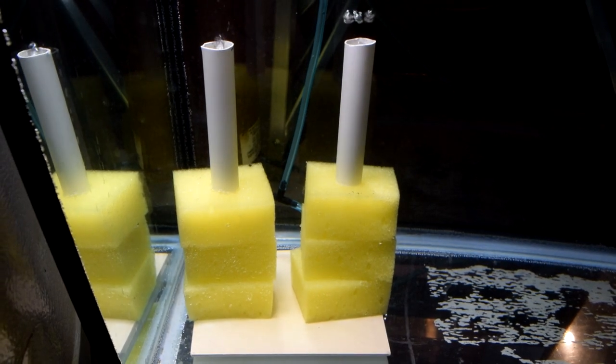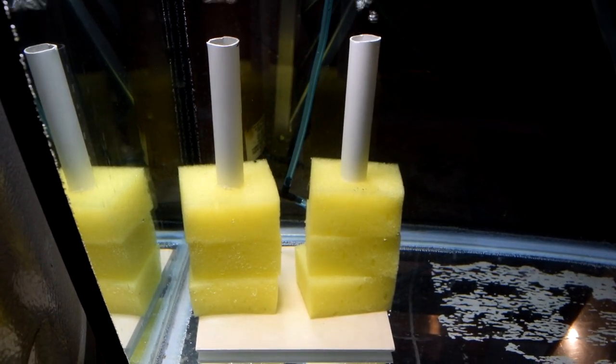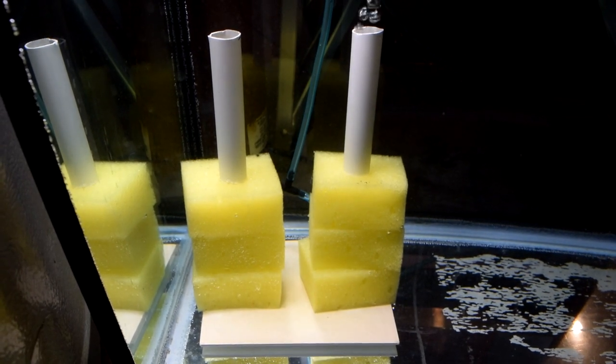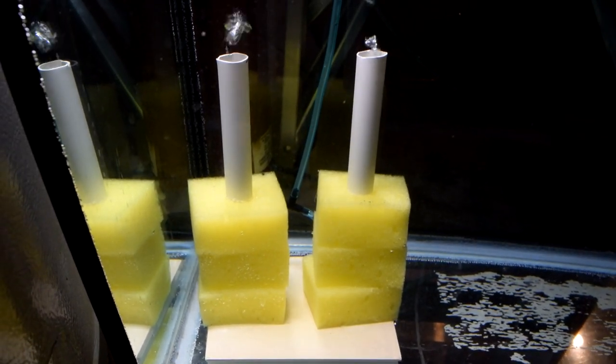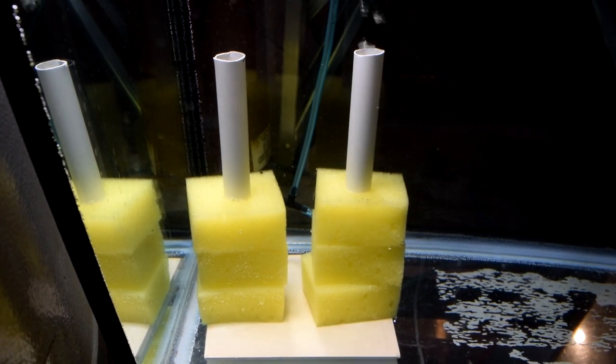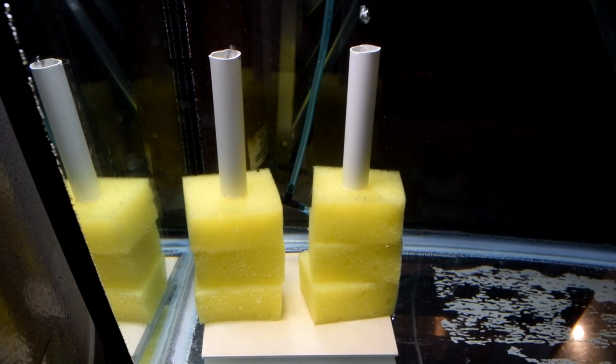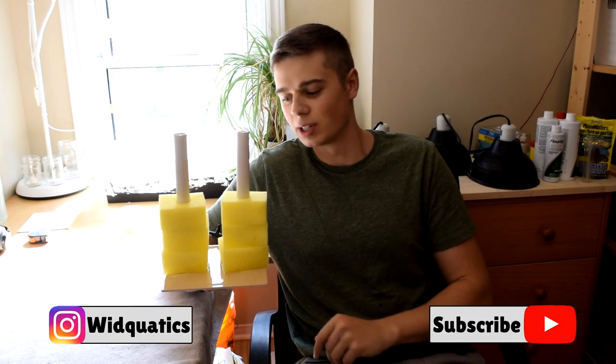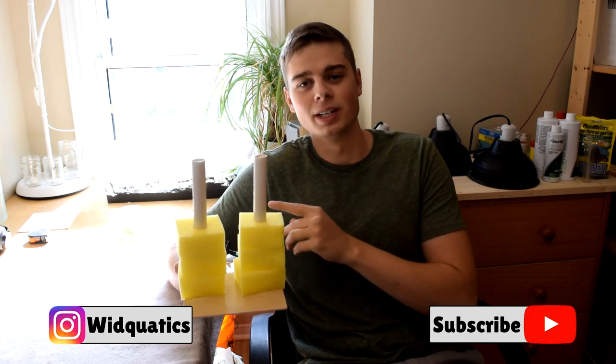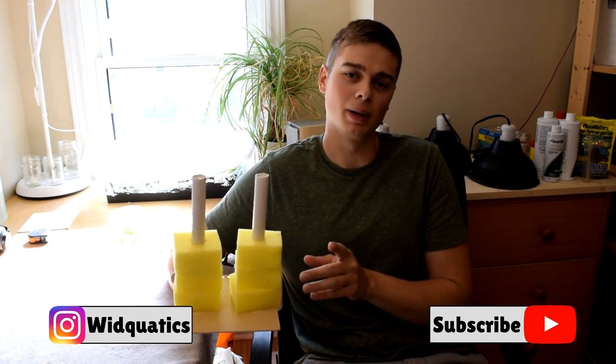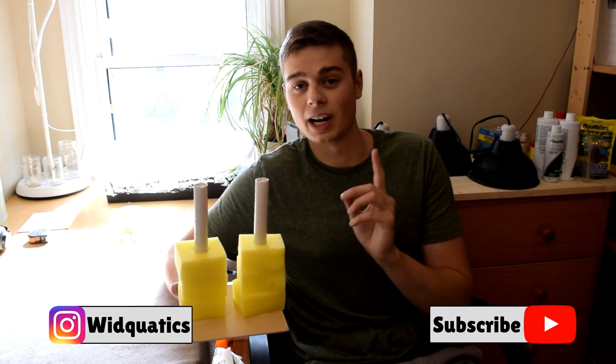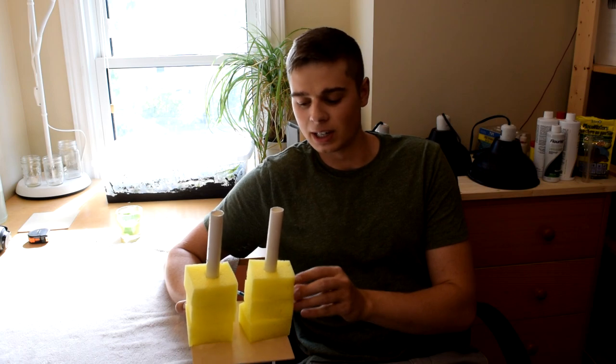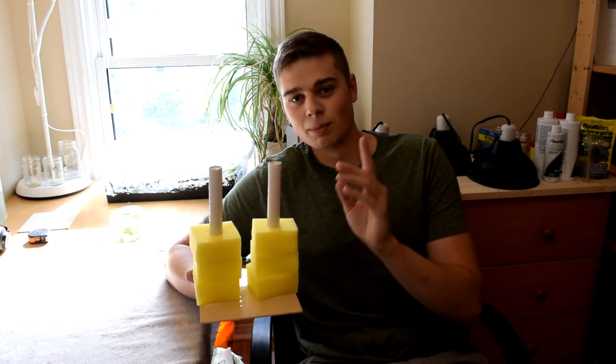All right, and there you have it, the two sponge filters in action. Now you may need to adjust the airflow to each individual lift tube, like I have in this demonstration, just simply using one of those valves that hook into the airline tubing. But as long as you can get both airlift tubes with air coming out of them, then you'll know that the sponge filter is working. All right guys, and there you have it, two little sponge filters kind of all built in one. I hope you guys enjoyed this tutorial. Like I mentioned earlier, I've got big plans coming up. This particular sponge filter is going to be used in a breeding project that I have coming up very shortly. So if you want to see that and you want to see some more videos like this one, hit that subscribe button, like this video if you liked it, leave a comment if you have any questions. And until next time, I'll see you guys later.